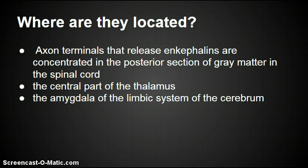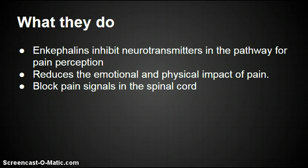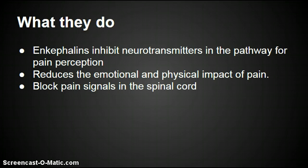What do enkephalins do? Enkephalin inhibits neurotransmitters in the pathway for pain perception. It reduces the emotional and physical impact of pain and blocks pain signals that come up the spinal cord. For example, if you're riding a bike and you fall off and scrape your knee — or even a bigger injury — enkephalin comes in and blocks pain signals so it doesn't hurt as much. Much like endorphins, but still not the same.